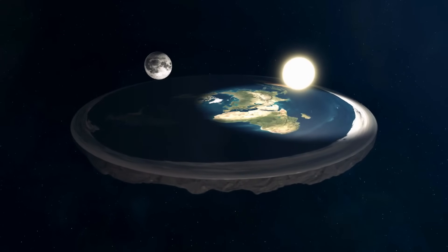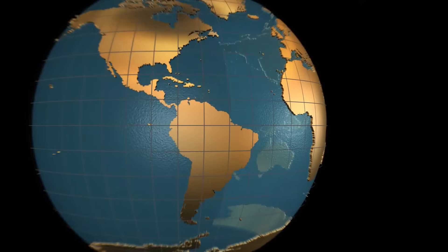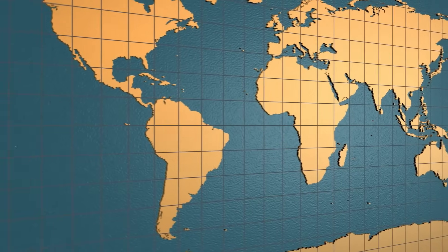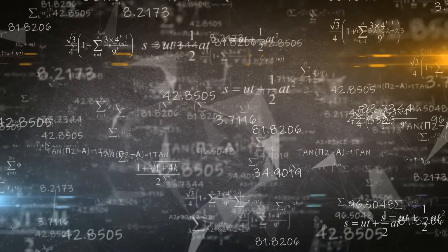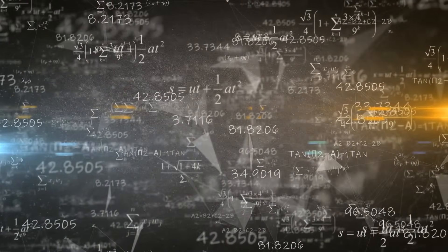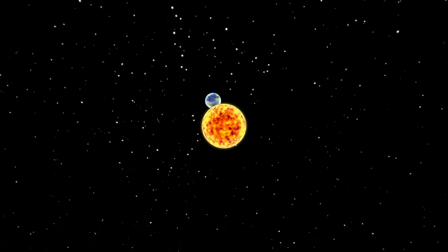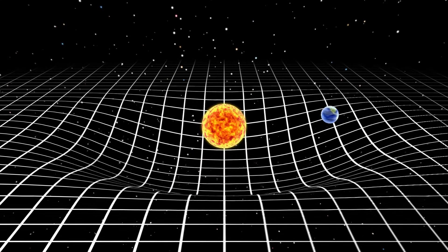The fact that the universe is flat is one of the most interesting things we've learned about it. This doesn't mean that the world is flat like a piece of paper. Instead, it means that it seems to follow Euclidean geometry, which says that angles in a triangle always add up to 180 degrees and parallel lines never meet. In that kind of computer game, the world doesn't curve back on itself no matter how far you go. It just keeps going.